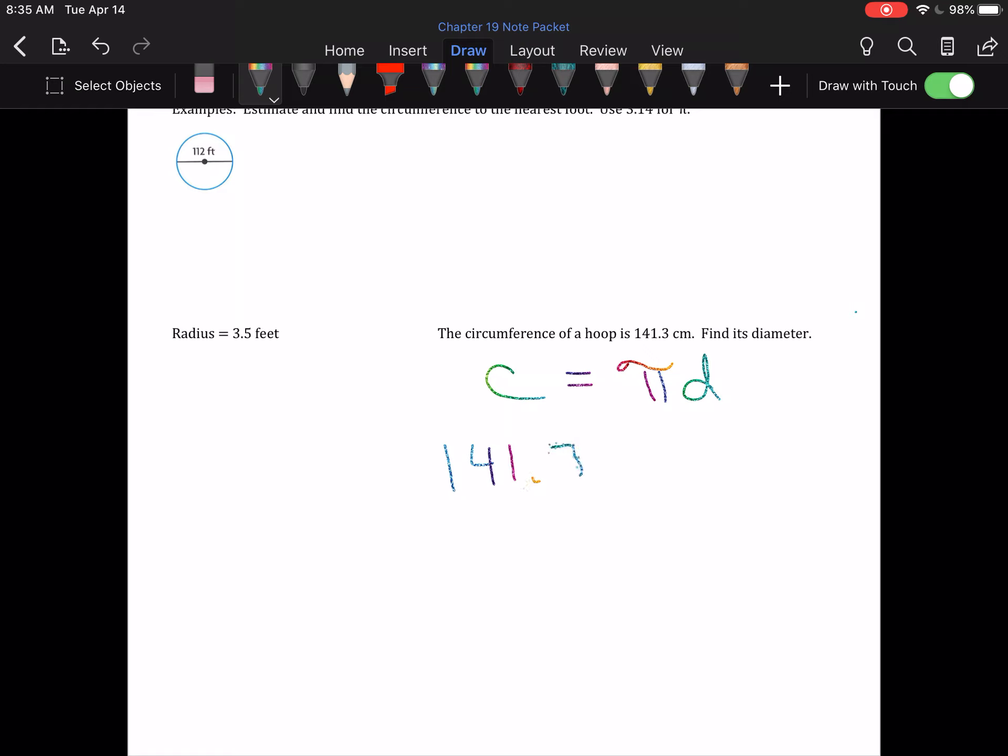141.3. Pi is 3.14 and I don't know D. Fill in what you know or what you can replace in terms of the pi symbol. Make that the number. And when you look at this, this is a one-step equation like we did way back in chapter 11.